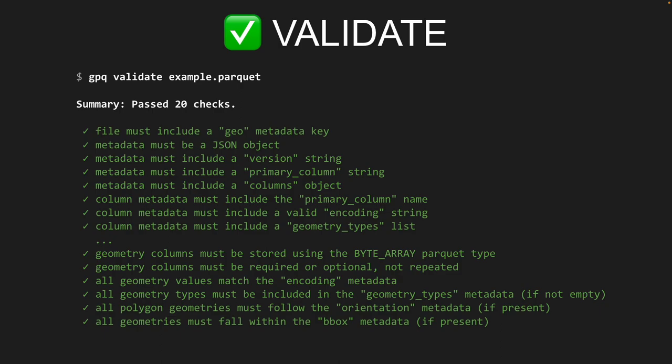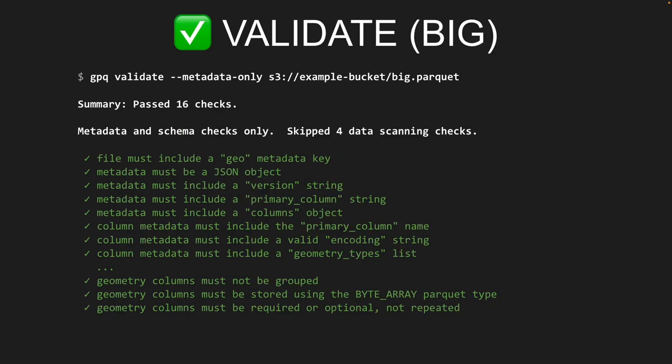The validate command also scans through all the data and ensures each geometry conforms with the specification — the right encoding, included in the list of geometry types if you include those in metadata, and that orientation is correct. If you're working with a very large GeoParquet file, you can optionally skip the scanning steps by running gpq validate with --metadata-only flag, which just runs metadata checks.